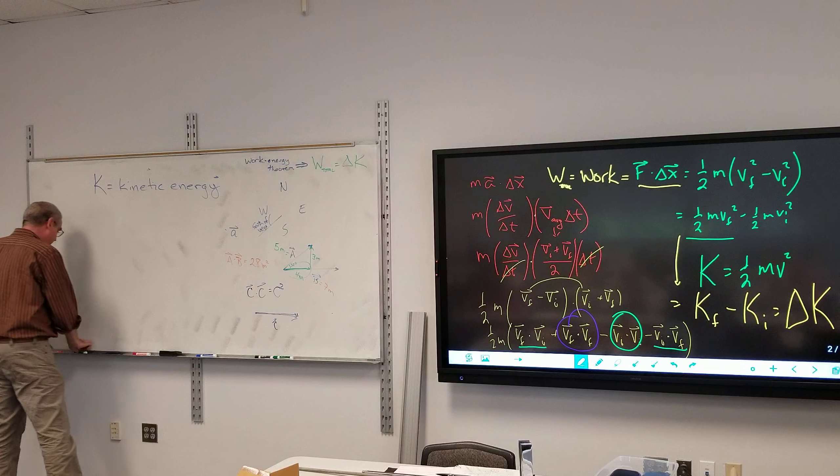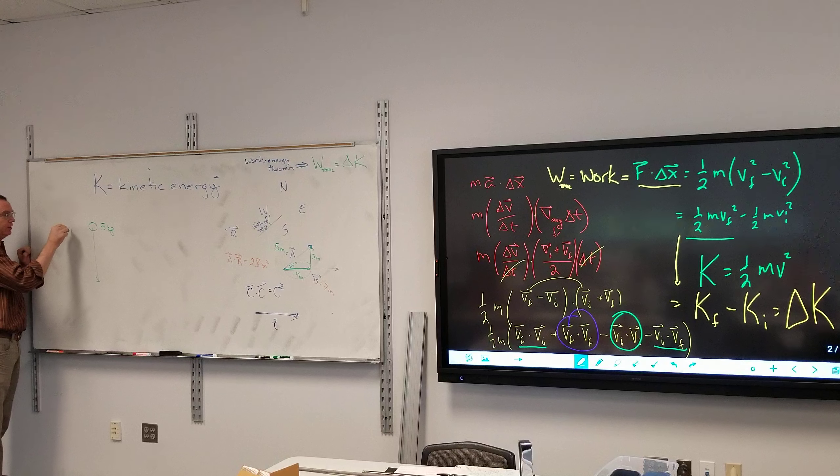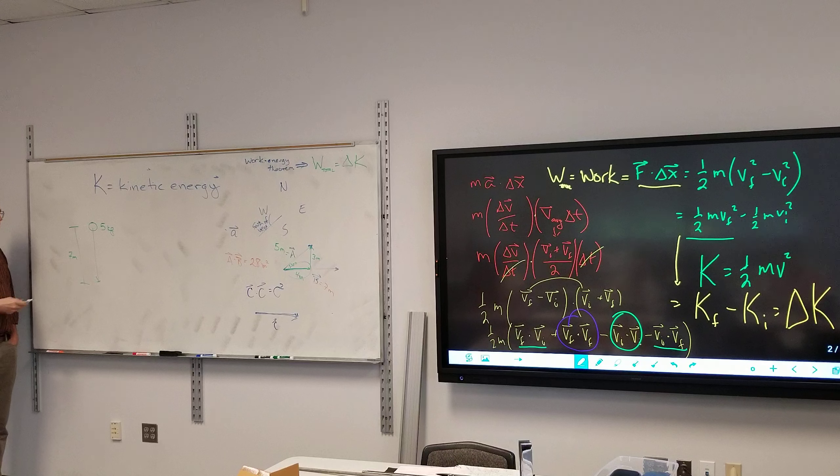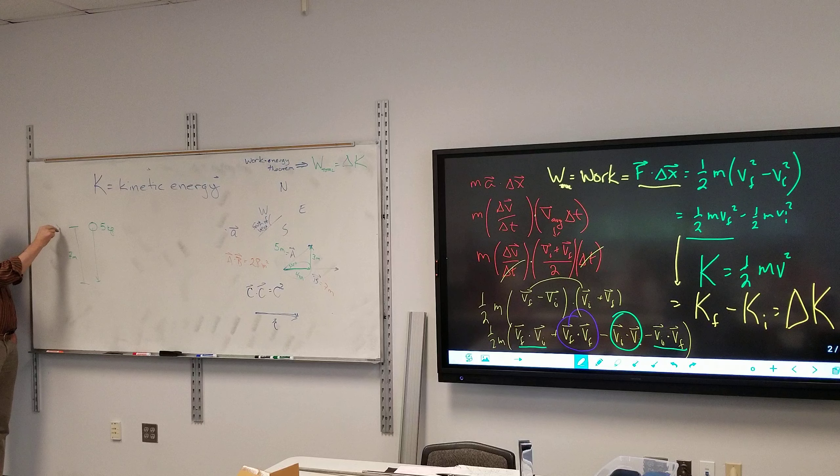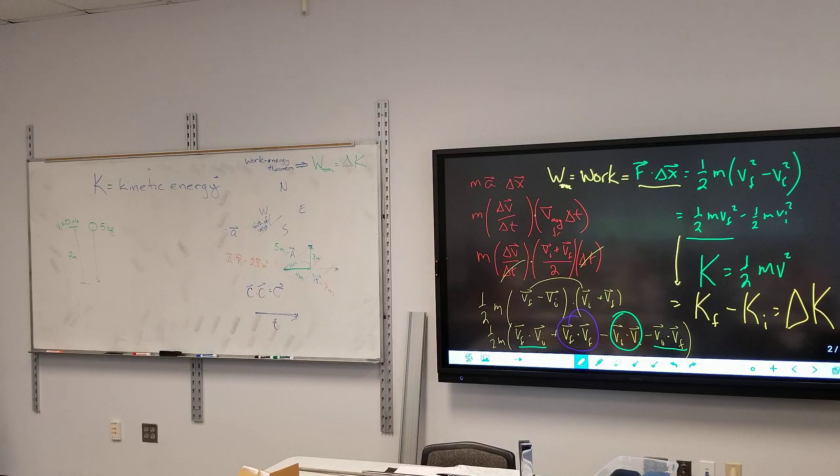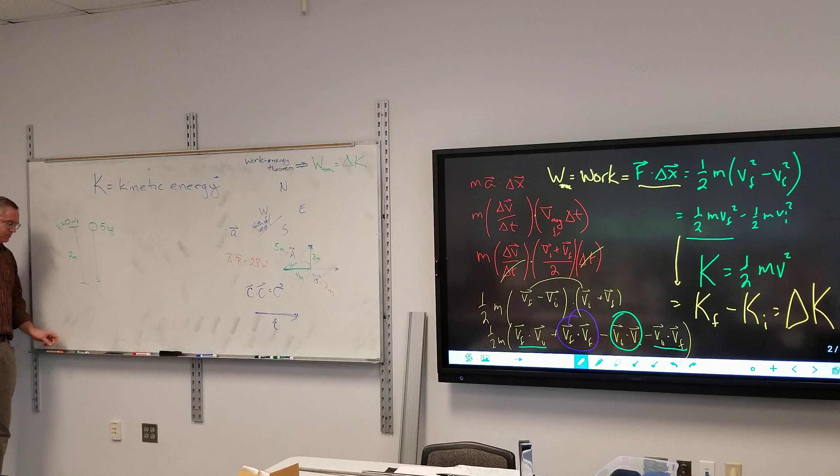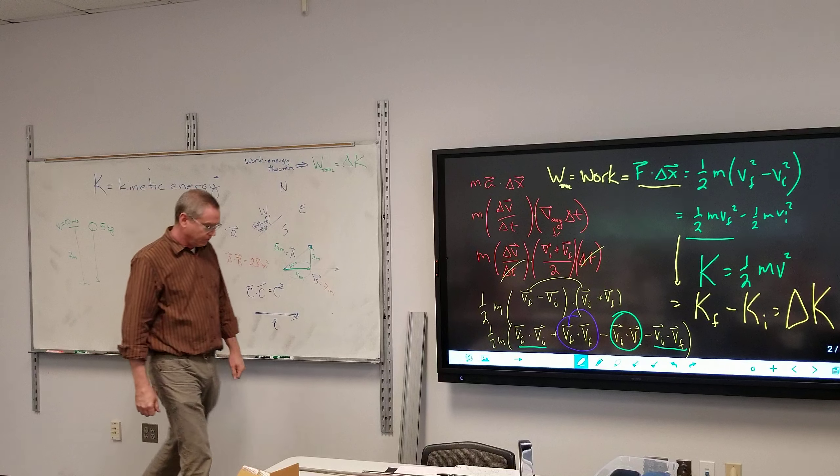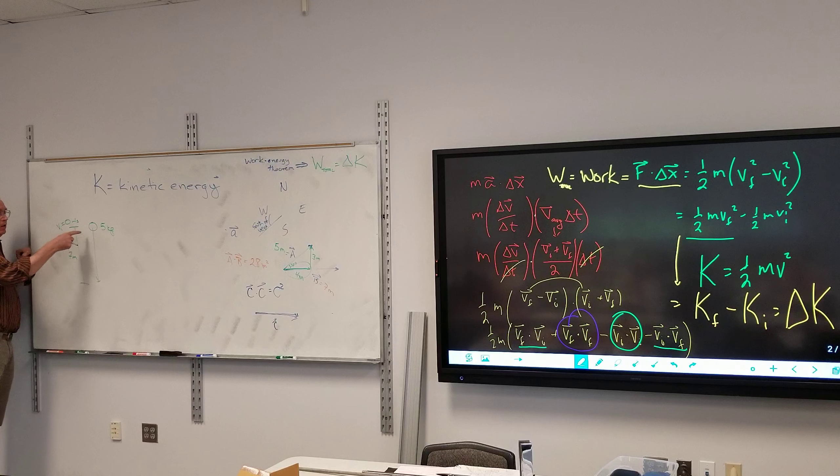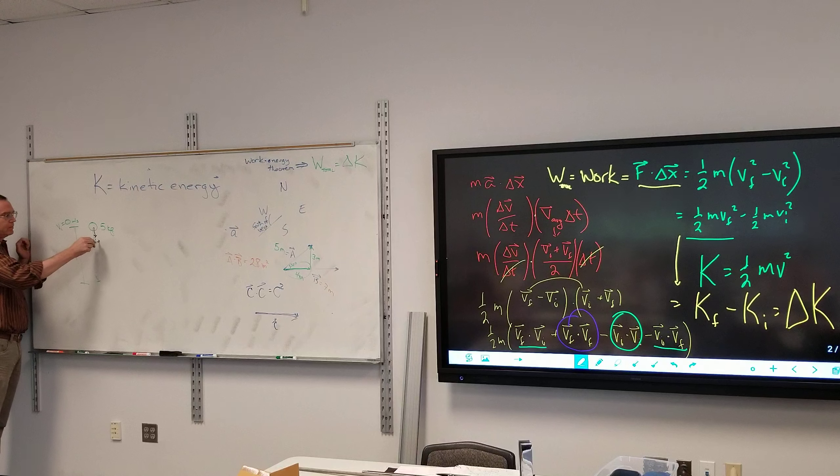Let's just do a quick and dirty problem here. I got a 5 kilogram mass, it is going to fall 7 meters. Let's start it at rest, so the initial speed is 0 meters per second. Let's figure out the work that was done. Well first off we need to figure out what are the forces acting on it. Force diagrams, they come back. While it's falling, what are the forces acting on it? Anything else?